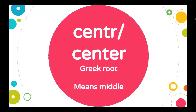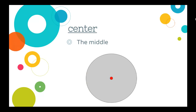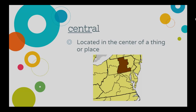Both spellings of 'center' sound the same — they are just spelled differently. This is a Greek word root that means 'middle.' Your first word is 'center,' which means the middle. In the picture, the red dot is in the center of the gray circle — it means the middle.